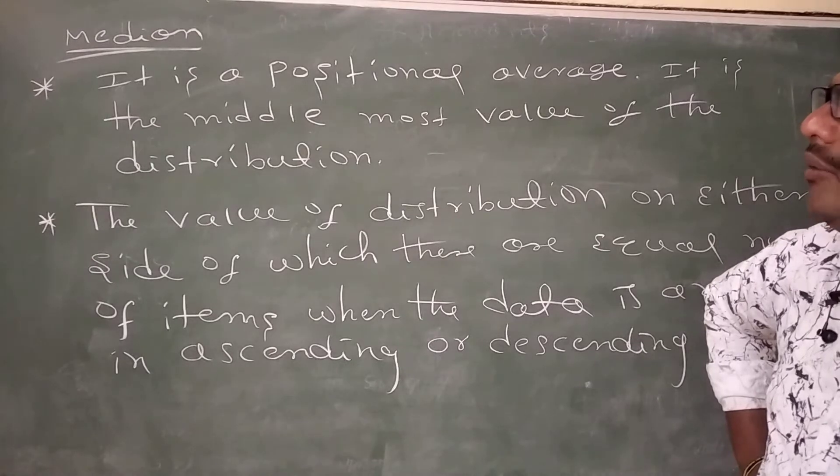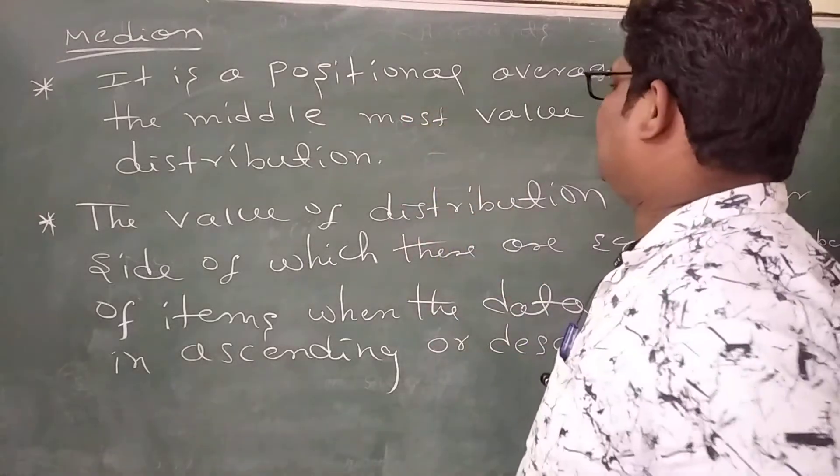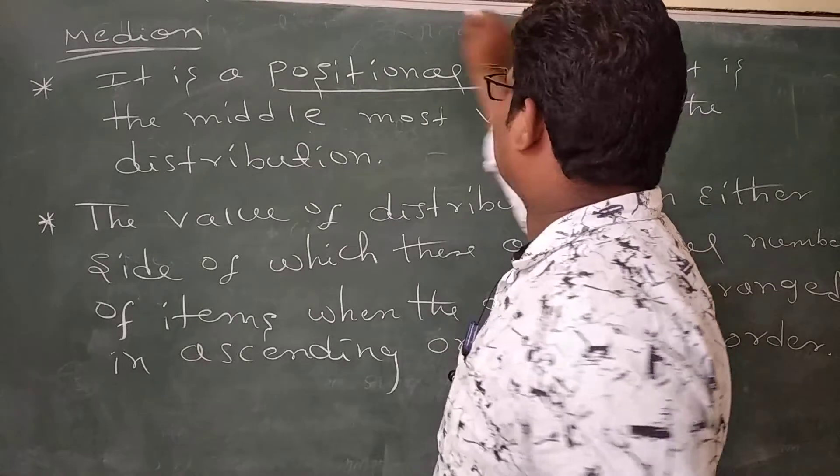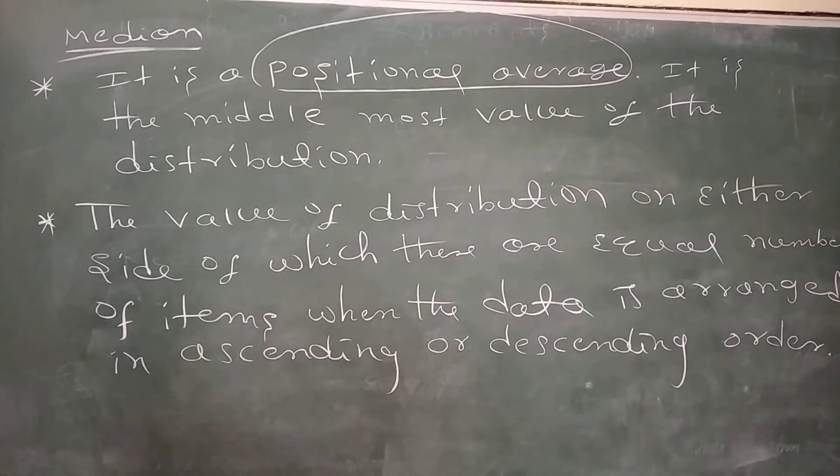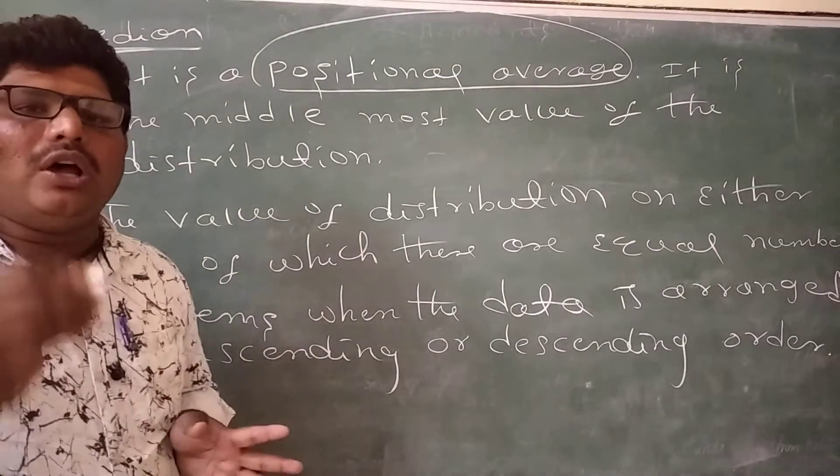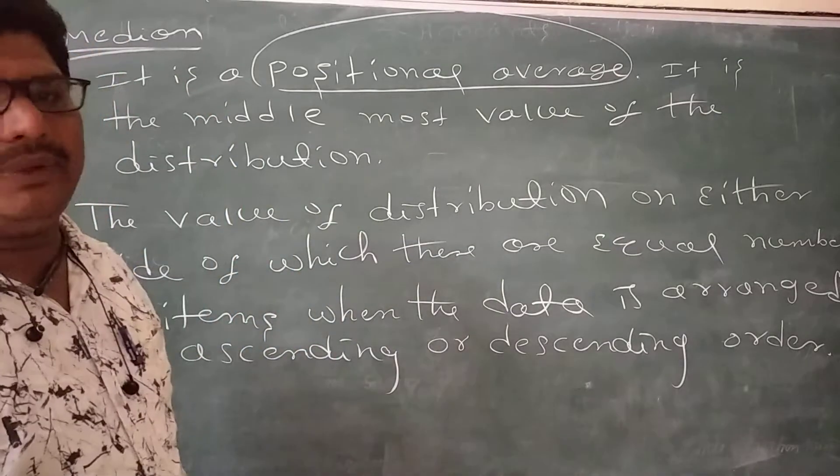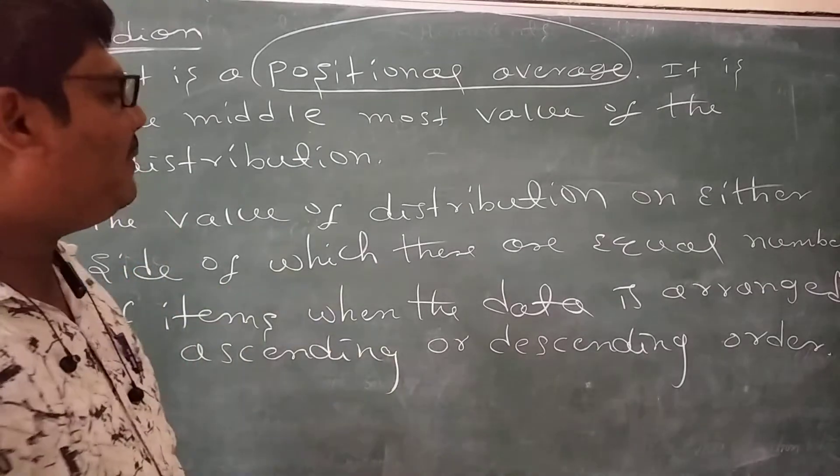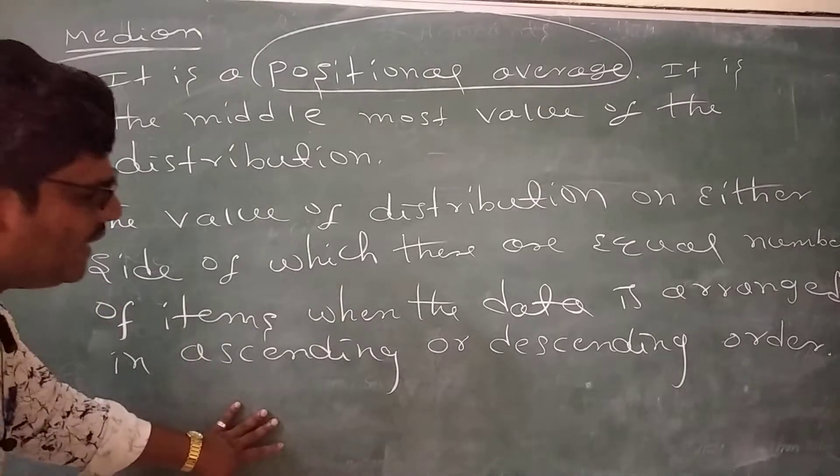The median, it is a positional average. It is the middle most value of the distribution. The value of distribution on either side of which there are equal number of items when the data is arranged in ascending or descending order.